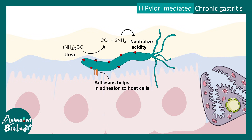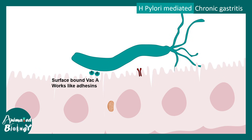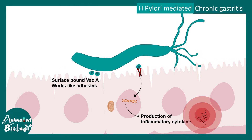H. pylori has additional pathogenic factors: adhesion factors help it adhere to host mucosal cells, and flagella help it navigate through the thick mucus layer. Proteins like VacA and CagA are potent cytotoxins. VacA also acts as an adhesion molecule and can bind to receptors, triggering gene expression of pro-inflammatory cytokines, evoking inflammation in the stomach lining.